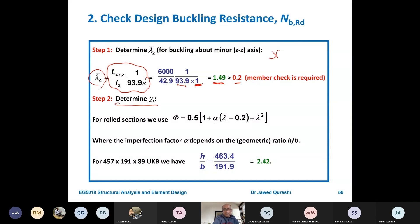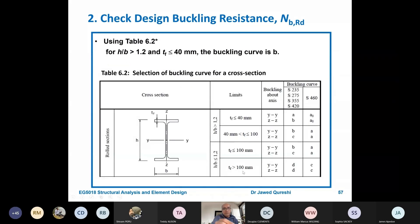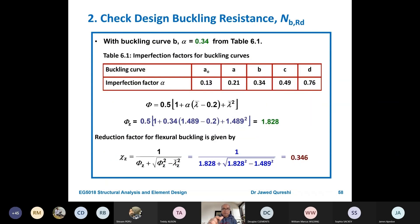And for working out reduction factor we need F_Y. For F_Y we need alpha. Alpha depends on H over B. Now where do we get this H over B? We get H over B from the section table. And when we use H over B this comes out to be 2.42. I have to use table 6.2. H over B is 2.42, so 2.42 is greater than 1.2. It means that I will use this information. Thickness of flange is less than 40, it means this information. Buckling is happening in minor axis which is ZZ. My steel grade is S235. This information. So my curve is going to be B. So when I determine curve I will go back to table 6.1. For B I have value of alpha 0.34. This is how we determine alpha. Then I put this into a formula for phi where lambda dash I figured out 1.49. Alpha I have just determined. When you put these values you will get this phi_Z. It means that it is in minor axis direction. Now once you have got this value if you put it back into formula for reduction factor you will get a reduction factor of 0.34.